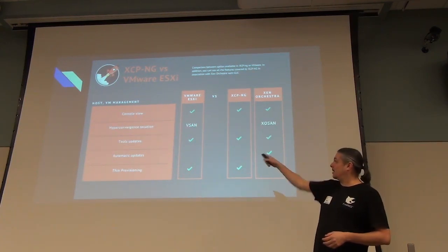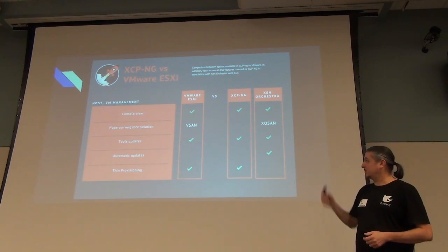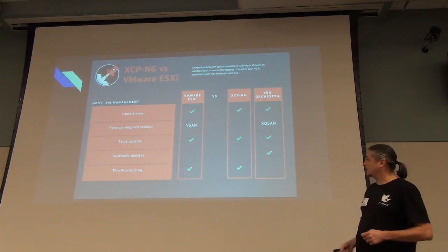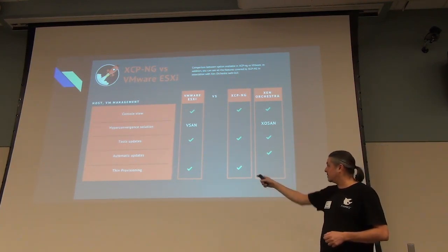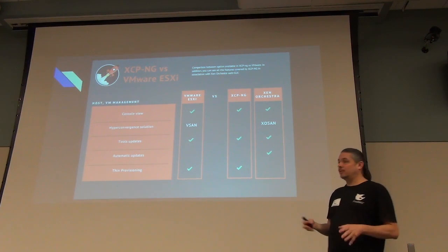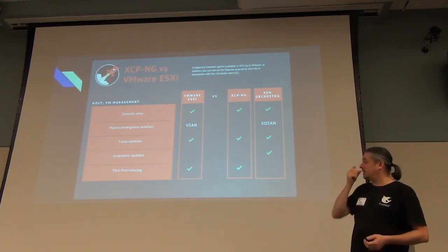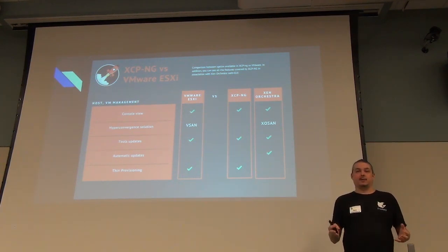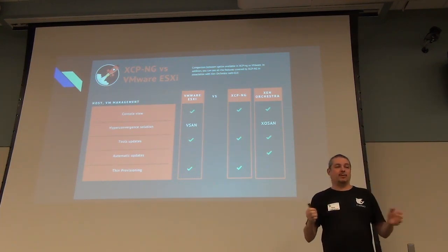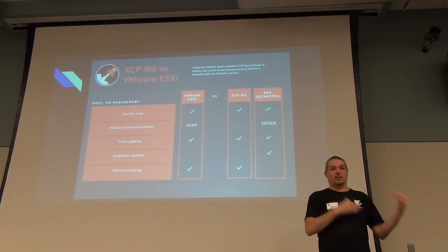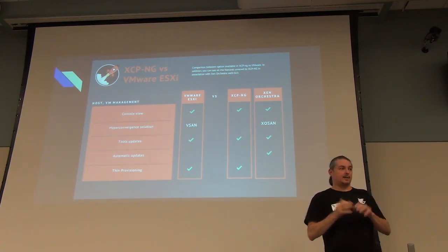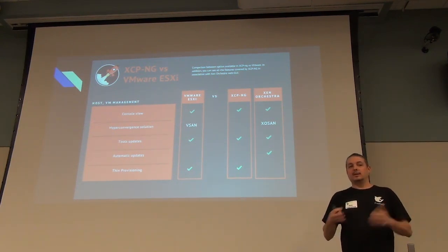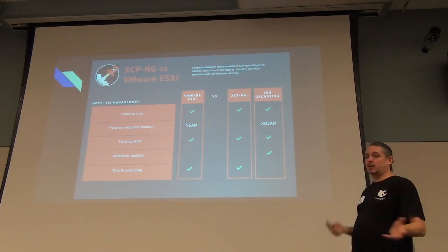For larger enterprise features, it supports hyperconvergence. They have their own equivalent to VMware vSAN called XOSan. It includes tool updates, automated updates, and thin provisioning. One really interesting thing about the way XCP-NG and XenServer as a whole works is the amazing amount of scripting that can be done — you can control everything about a VM from the command line: create, move, migrate, and snapshot them using bash scripts or any scripting language. Xen Orchestra essentially puts a pretty web interface on top of that.